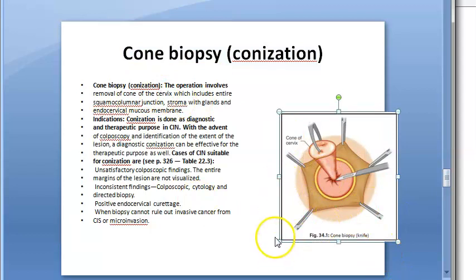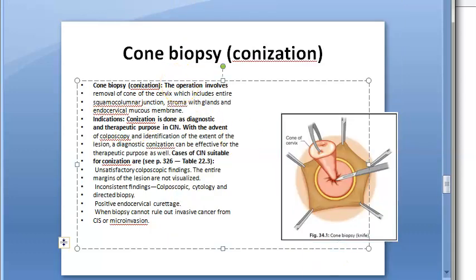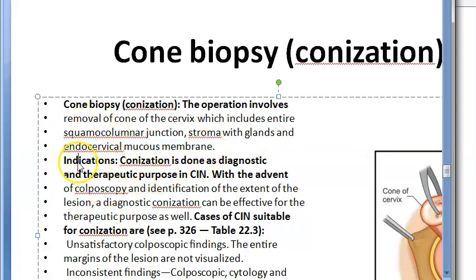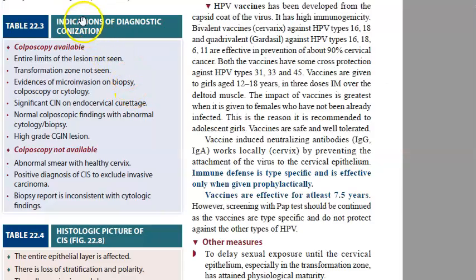Finally, cone biopsy, also called conization, is an important procedure. A cone of tissue is cut out from the cervix, including the entire squamocolumnar junction, stroma with glands, and endocervical mucous membrane. Cone biopsy is done for diagnostic purposes - to identify the type of neoplasm - or for therapeutic purposes, to treat CIN.